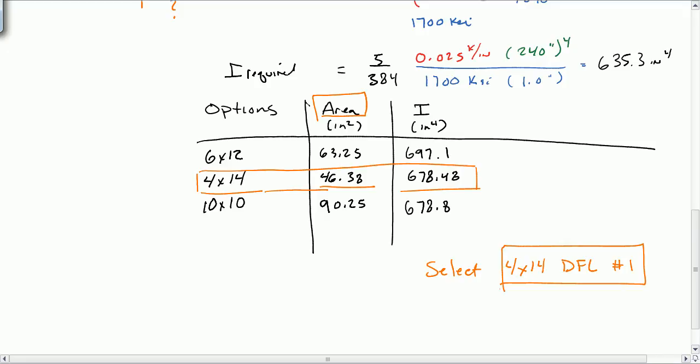Now, this is just checking for deflection. We would also have to check this beam for strength based on what we did in the last section using stress. We would take the modulus, the section modulus, and we'd calculate the maximum moment, divide them out, and determine if we have, if we exceed the allowable stress. So again, this is just based on deflection only. We still need to check for strength.